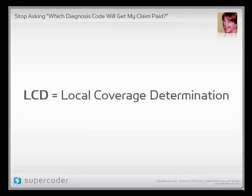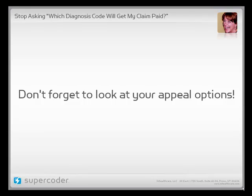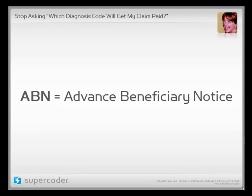Okay, so appeals. But what if the LCD says I can't get the claim paid and I don't have an appeal route and there's just no way to get it in the medical record — that means no cash at all, right? Well, not necessarily. No cash for the insurer, but that means the patient is financially responsible.